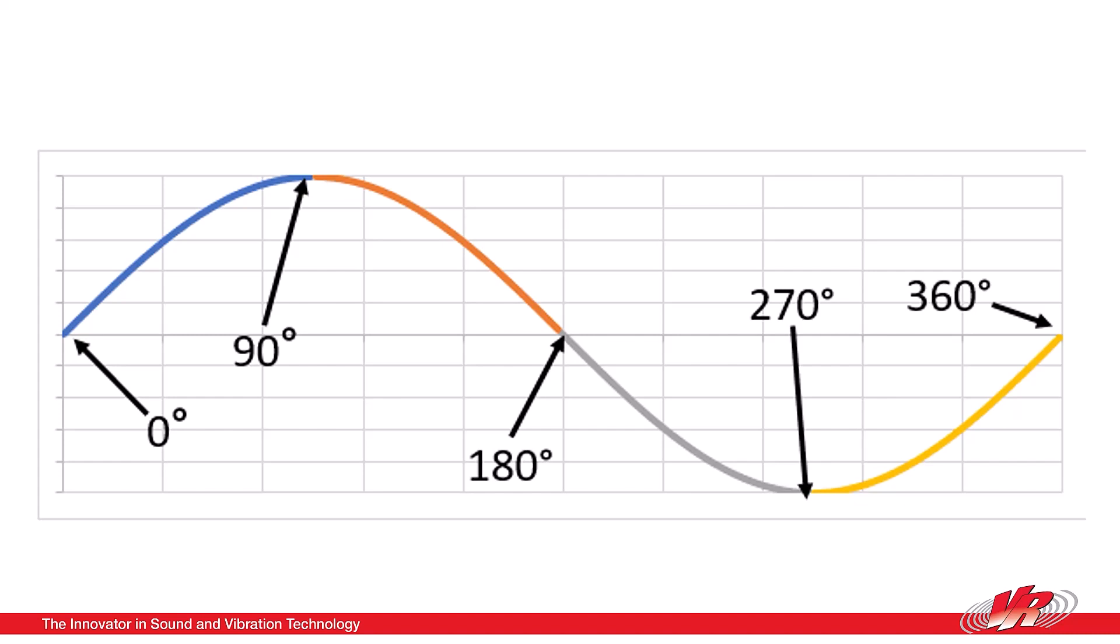Phase is another important measurement of the sine wave and it indicates where the wave is in its cycle. Phase can be measured in degrees from zero degrees to 360 degrees or in radians zero to two pi.